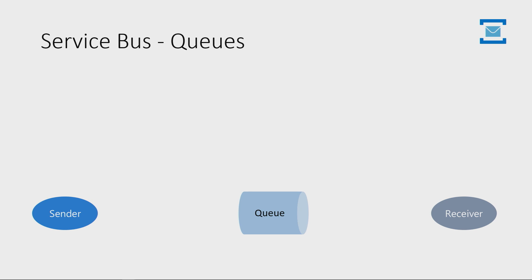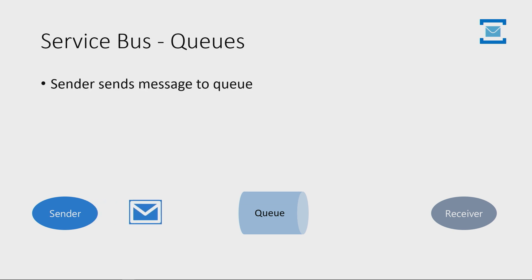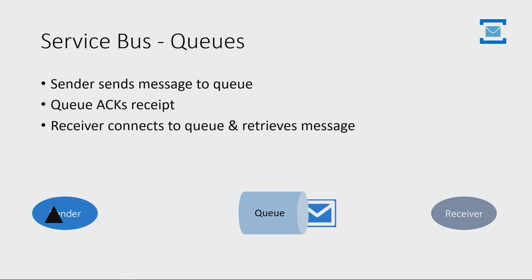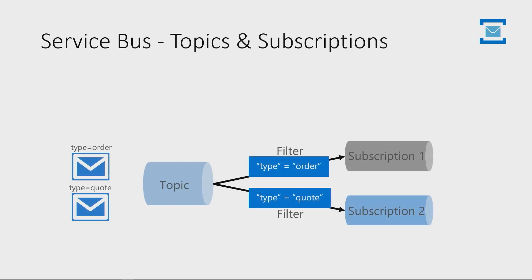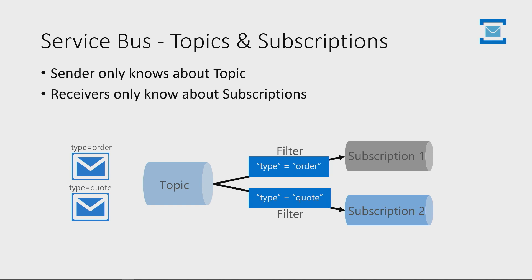We touched upon some of the introduction about Service Bus earlier, but now we can talk about all the features available. We have the point-to-point semantics with queues, where the sender sends a message, the queue holds it and makes sure it's never lost, and the receiver can receive the message as well. We also have topics and subscriptions, which is more of a pub-sub semantic, wherein the sender only knows about the topic and the receiver only knows about the subscriptions. The messages are routed based on filter conditions.